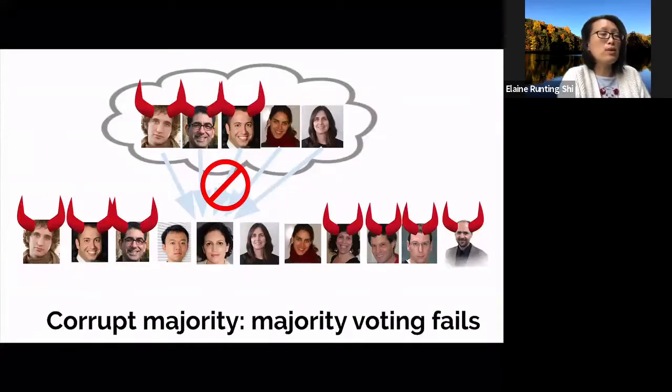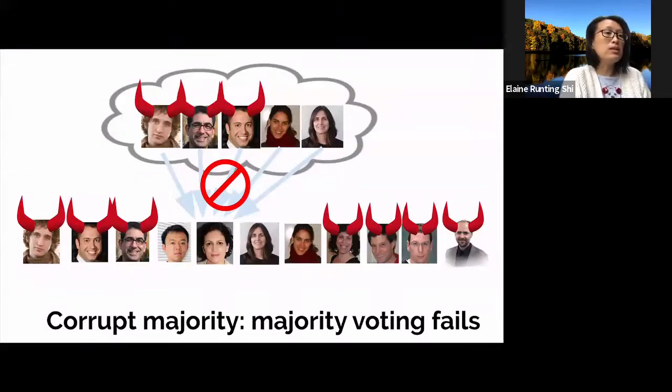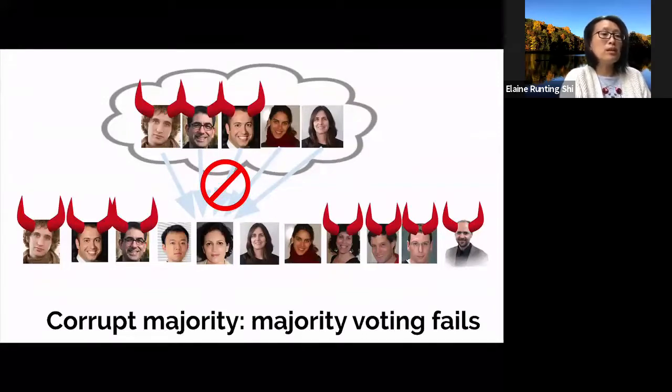Okay, so what about the corrupt majority setting? Unfortunately, here the majority voting technique doesn't work anymore. And therefore, it's unclear how committee members can securely convey their decisions to those outside the committee. Therefore, in the corrupt majority setting, the folklore committee election technique fails to work. In other words, even with static corruption, it seems very much non-trivial to achieve consensus in a small number of rounds in the corrupt majority setting.